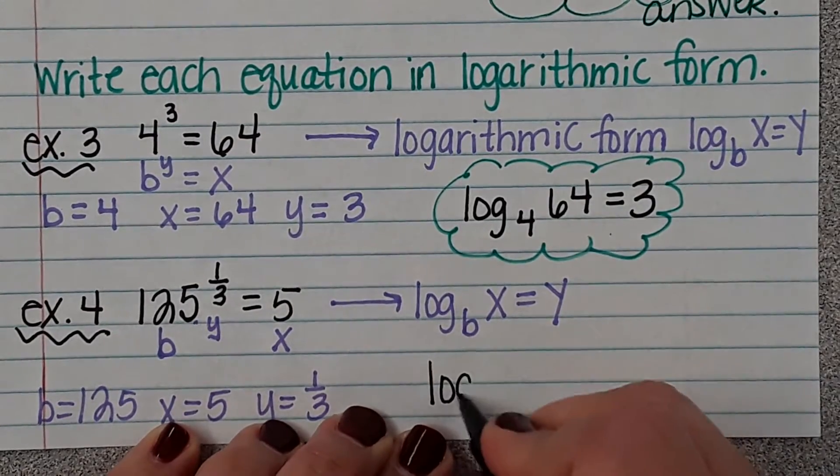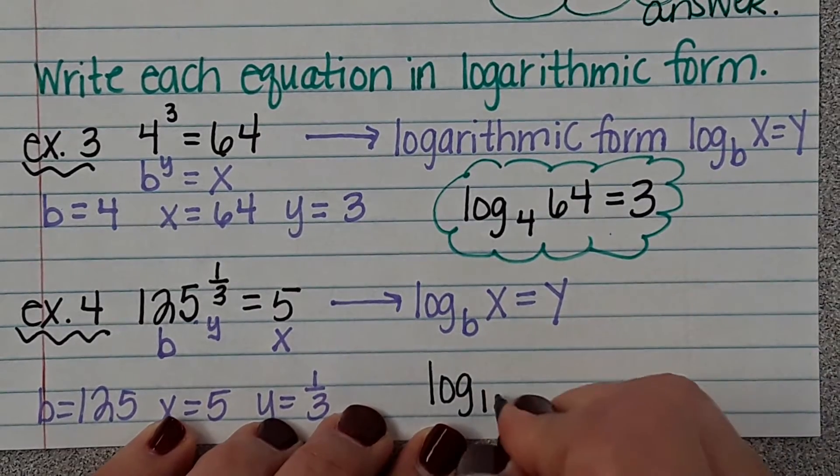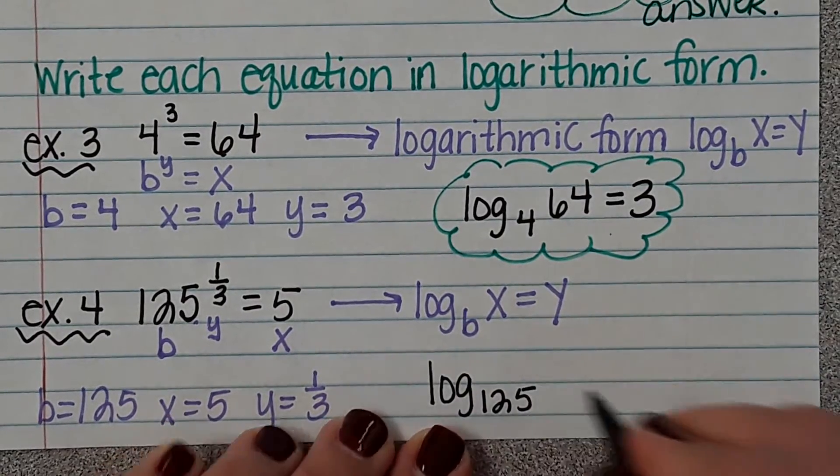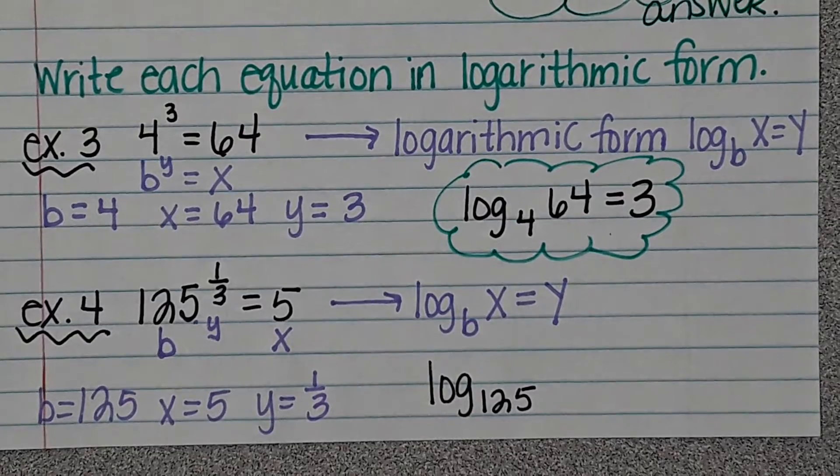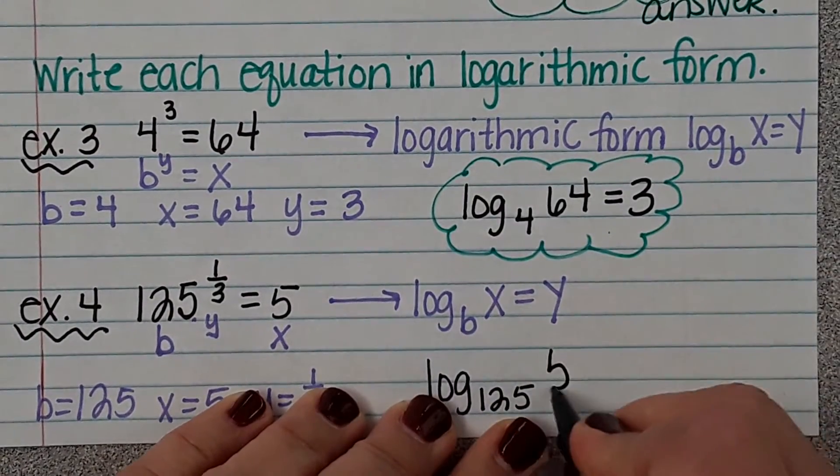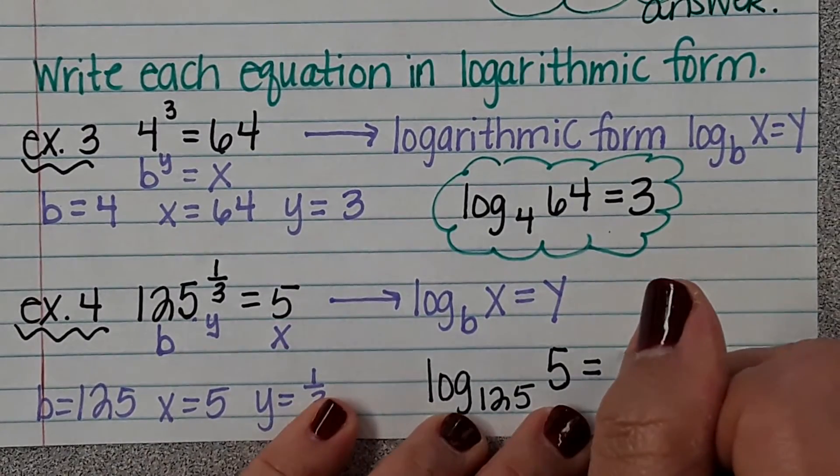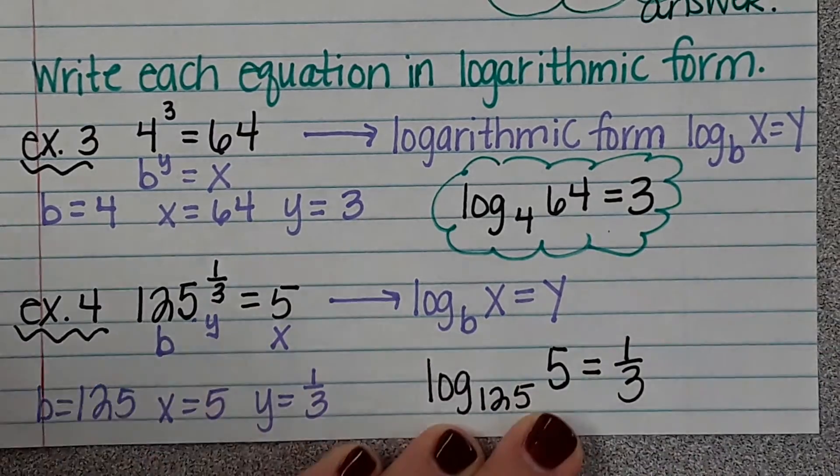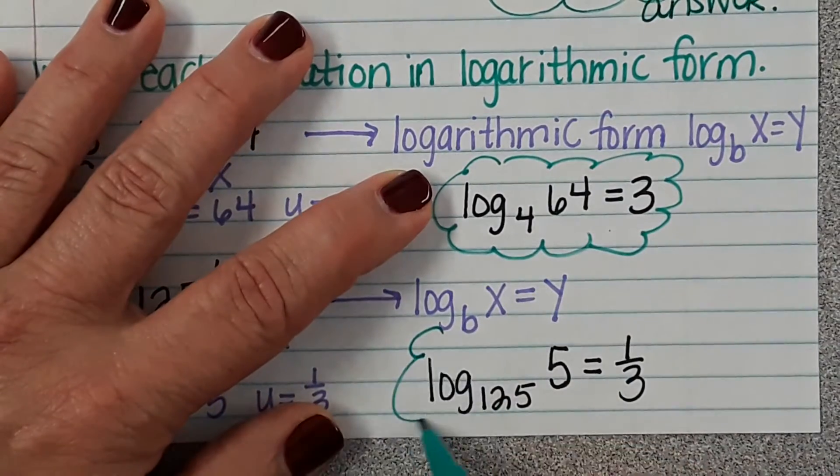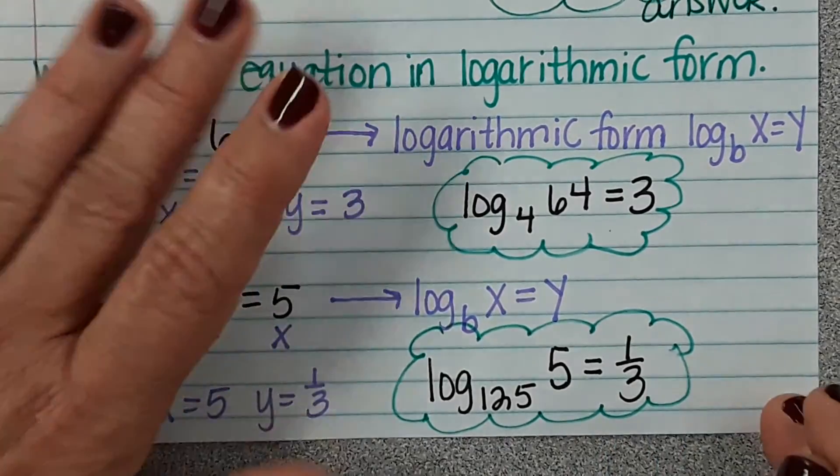So log, what number is our b? So 125 is going to be the subscript. It's going to be down there at the bottom with the g. Our x is going to be here. And it's going to equal 1/3. That's our answer.